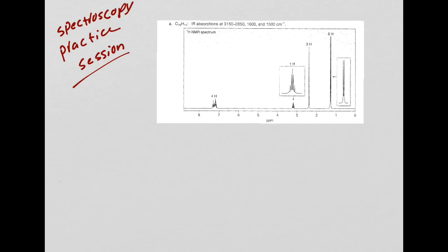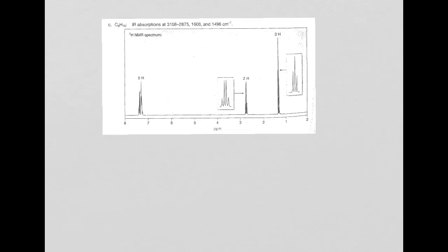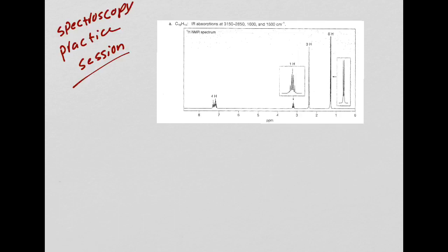All right class, now we're going to do more practice problems in spectroscopy to make sure you get this down. I gave you guys a packet with three problems to do. Do these problems, work them out, and then watch these videos - you'll get a lot more out of it. Let's do the first one. They've given us a formula, and we know that number of carbons times 2 plus 2 will give us the number of hydrogens if it was nothing but single bonds. I have 10 carbons, so 10 times 2 plus 2 equals 22 hydrogens.